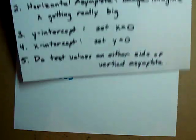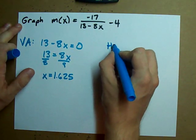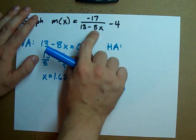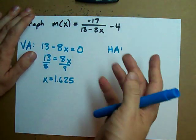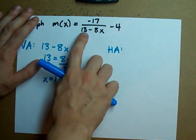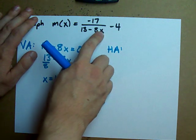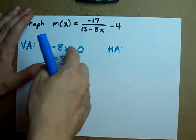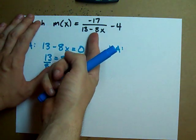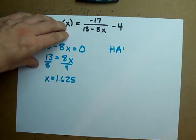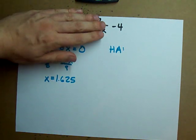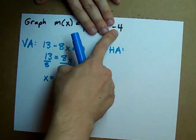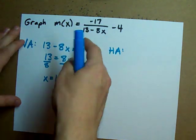We're going to find our horizontal asymptote by imagining that x gets really really big. When x gets really big, then negative 8x gets really really big, and 13 minus 8x gets really really big in a negative way — because if x is a million, you have 13 minus 8 million. It's getting bigger and bigger on the bottom. If you divide by a bigger and bigger number each time, negative 17 divided by negative 8 million is a really really small number. This fraction just becomes smaller and smaller, and y gets closer and closer to negative 4.